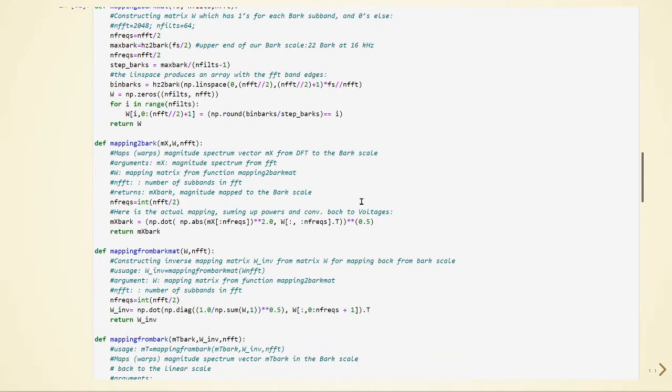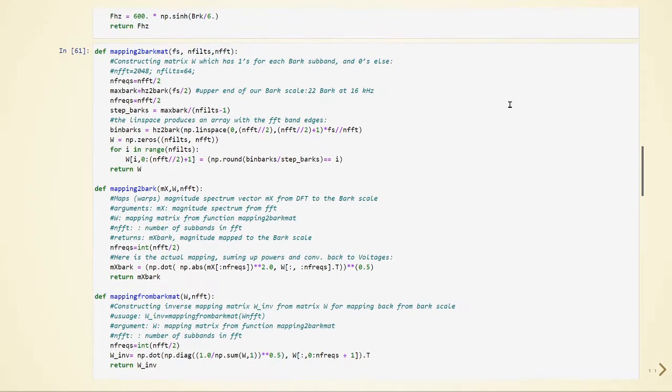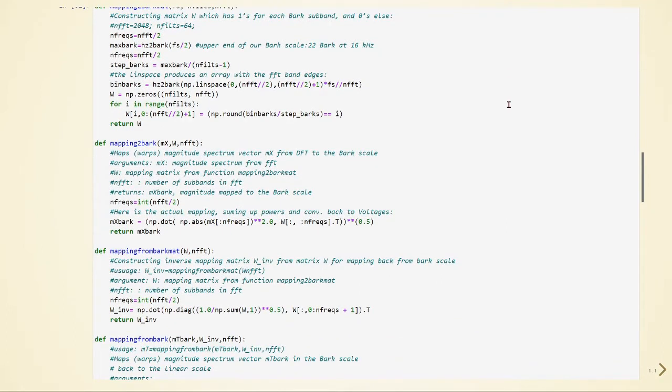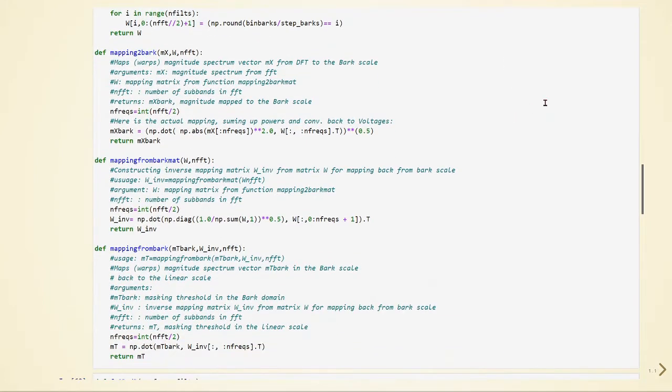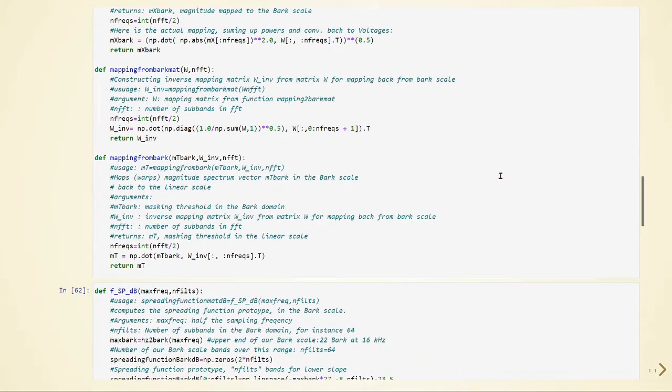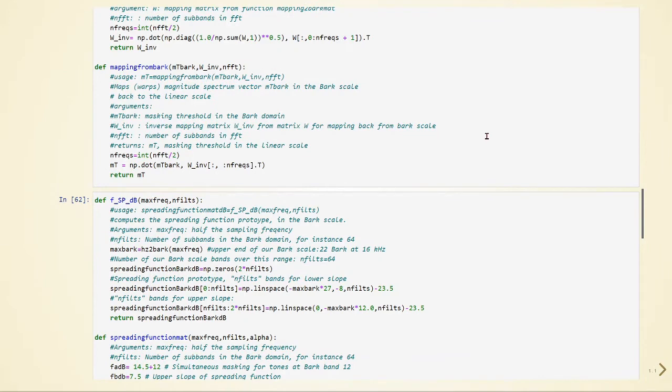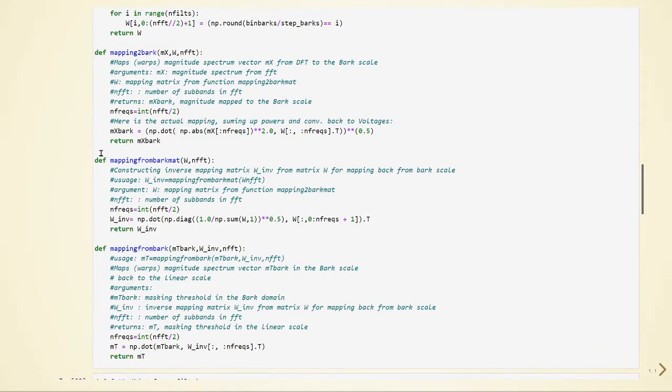Here we have a function mapping to Bark that uses this matrix W previously calculated together with a magnitude spectrum from the FFT and the number of subbands and FFT, and will return the magnitude mapped to the Bark scale. We also have a mapping from Bark map that constructs the inverse matrix W inverse from the matrix W for mapping back from the Bark scale. And we have this mapping from Bark that maps or warps the magnitude spectrum vector in the Bark scale back to the linear scale and returns the masking threshold in the linear scale.